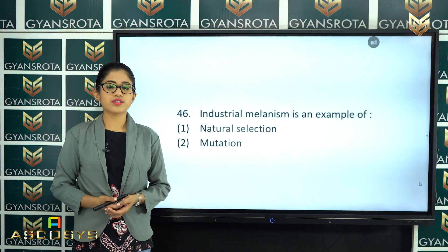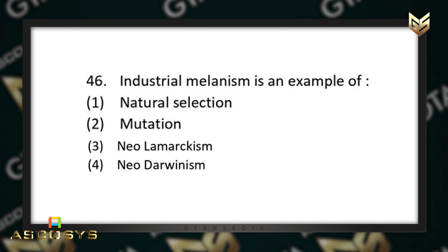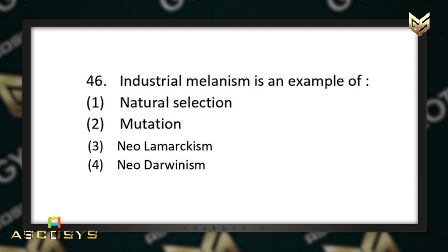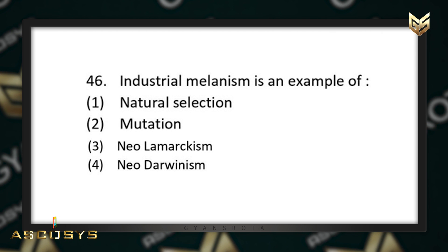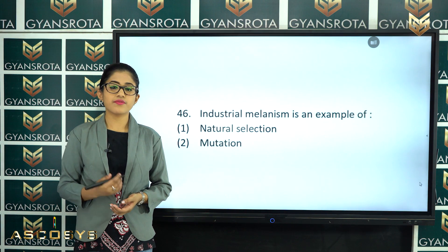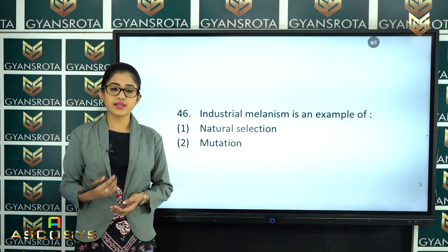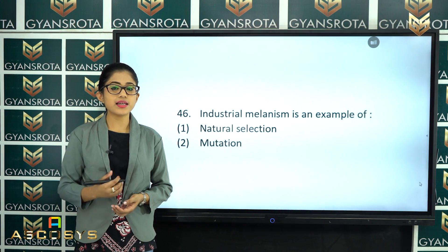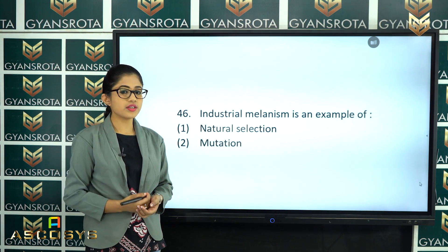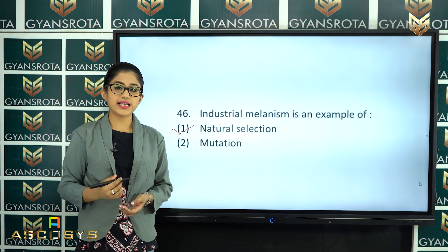The next question is question number 46. Industrial Melanism is an example of natural selection, mutation, neo-Lamarckism, or neo-Darwinism? This question is from the chapter Evolution. It is clearly written in the textbook that Industrial Melanism is an example of natural selection. Option number 1 — natural selection — is the correct answer.